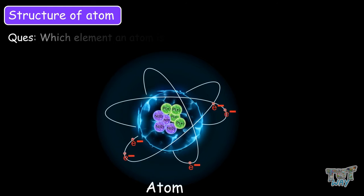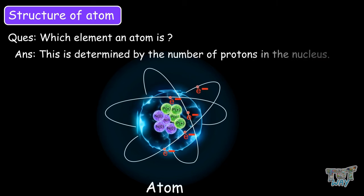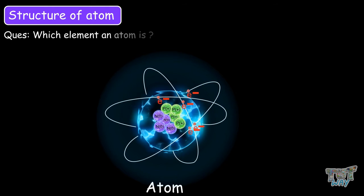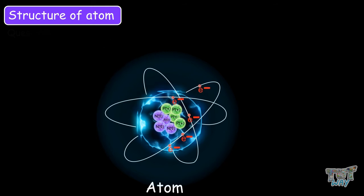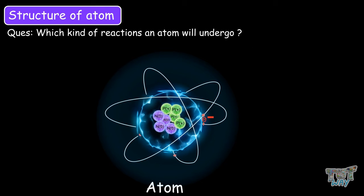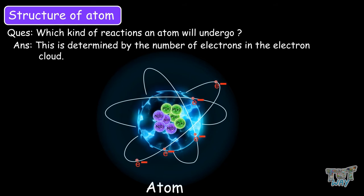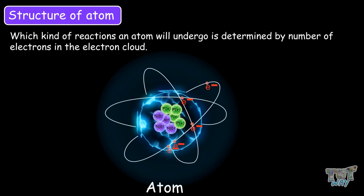Which element an atom is, is determined by the number of protons in the nucleus. What kind of reaction an atom will undergo is determined by the number of electrons surrounding the nucleus.